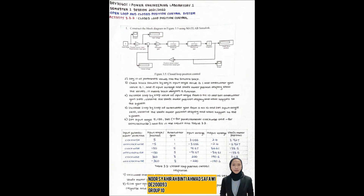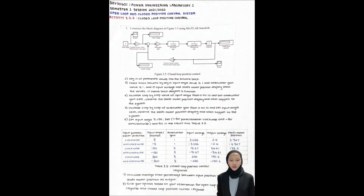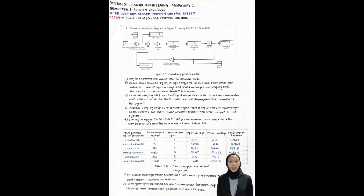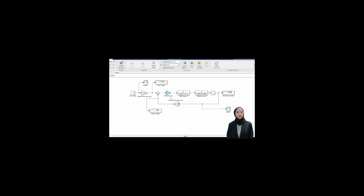Assalamualaikum warahmatullahi wabarakatuh. My name is Noh Shahila Binti Ahmad Safawi and my matrix number is DE200093. Today I will explain Activity 3.3.2: Closed Loop Position Control. First, we need to construct the block diagram in Figure 3.1 using MATLAB software. Second, we key in all parameter values — VA, JM, DM, LA, RA, N, and KP — into the Simulink block. Third, we check the block by setting input angle to 1 and potentiometer gain to 1; if input voltage and shaft motor position show values, the block diagram is functioning.